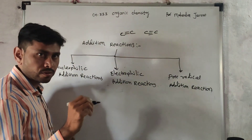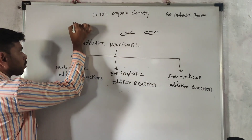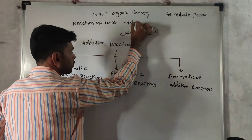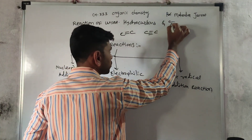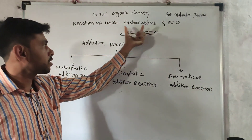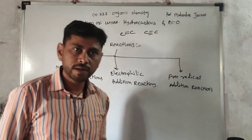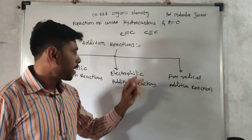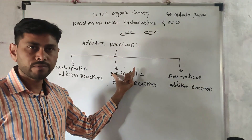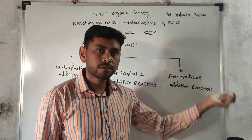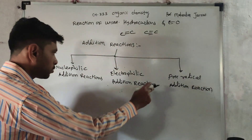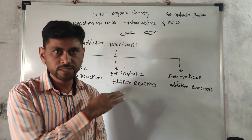We are studying the topic — Reactions of Unsaturated Hydrocarbons and Carbon-Oxygen Double Bond. The addition reaction is divided into two parts: substrate and reagent. Depending on the nature of the reagent — whether it is nucleophilic (Nucleophilic Addition Reaction), electrophilic (Electrophilic Addition Reaction), or free radical (Free Radical Addition Reaction) — these are the three types of addition reactions.